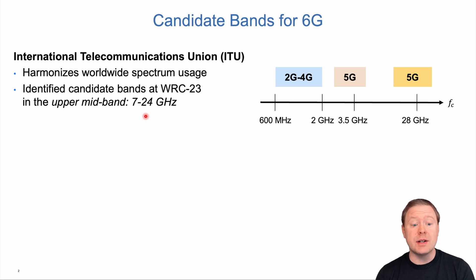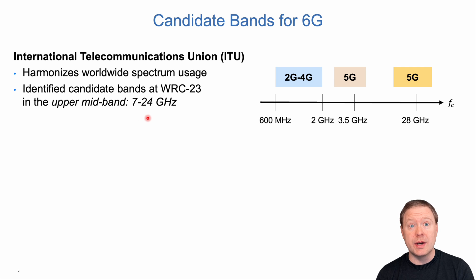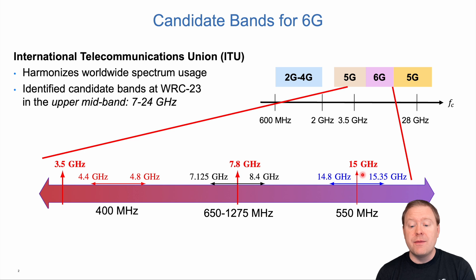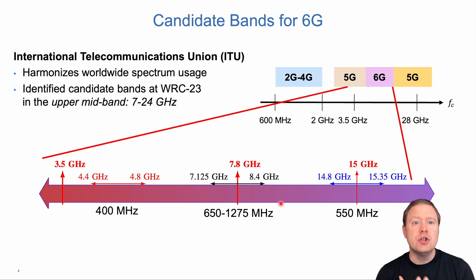ITU had a meeting last year where they looked into which new frequency bands could be assigned for 6G. All of those are around the new mid-band, particularly the upper mid-band between 7 to 24 GHz. They considered one band around 4.6 GHz, one around 7.8, and one around 15 GHz. Among these, only the one at around 7.8 GHz contains a huge amount of new spectrum compared to what we already have in 5G networks. So I will consider this as the main band in this presentation.